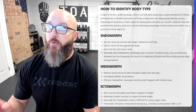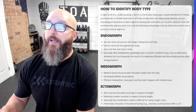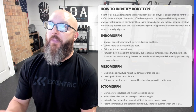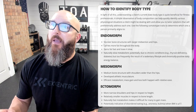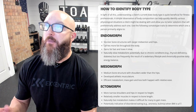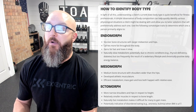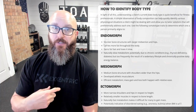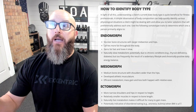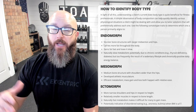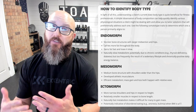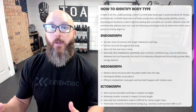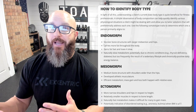Medium bone structure with shoulders wider than their hips — yes, me as well. Developed athletic musculature — yes. Effective metabolism, muscle gain and loss both happen with relative ease — no, that's where it breaks down for me. I consider myself a mezzo-endo. I think I'm a little bit more dominant of a mesomorph but I have endo qualities as well — probably 50-50 on both, but because of the bone structure component, that's where I lean toward the mesomorph side.